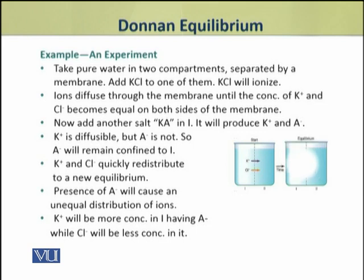These ions are permeable to the membrane and diffuse across it. After some time, the concentrations of potassium and chloride ions equalize between the two compartments. At this stage, we shall add another salt with a non-diffusible anion.